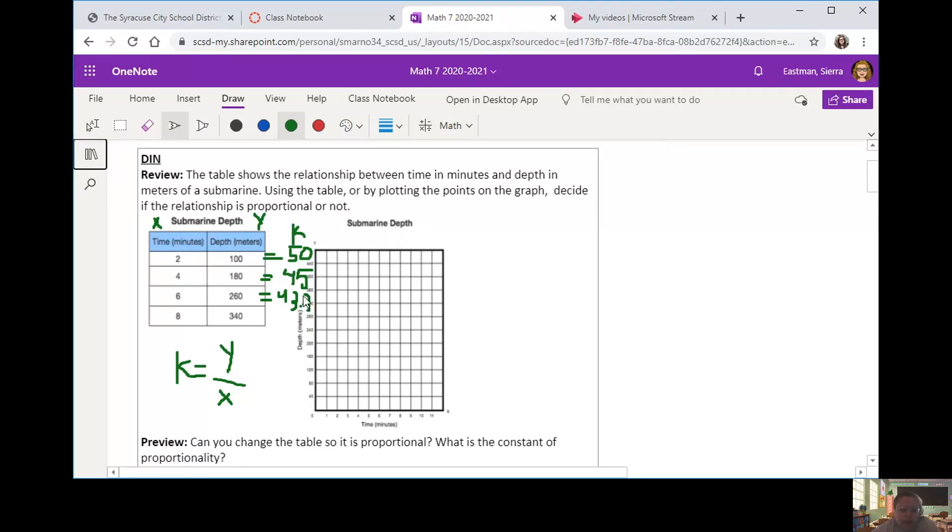So that 3 is repeating. Put my repeating line on top. And 340 divided by 8, that's about 42.5. So all these are pretty close, but not equal. So we can say, no, this graph and table, this situation, this relationship is not proportional.